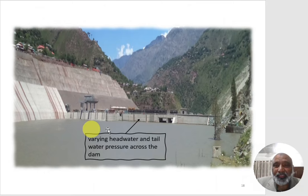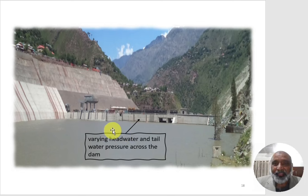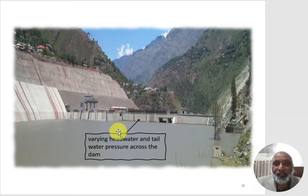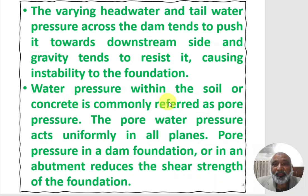The varying head water and tail water pressure across the dam tends to push it toward the downstream side, while gravity tends to resist this, causing instability. If the reservoir water level is very high and the dam is not sufficiently designed, it will become unstable due to this pressure. Water pressure within the soil or concrete is commonly referred to as pore pressure, which acts uniformly in all planes and reduces the shear strength of the foundation or abutment.